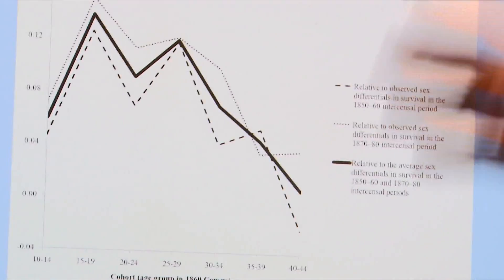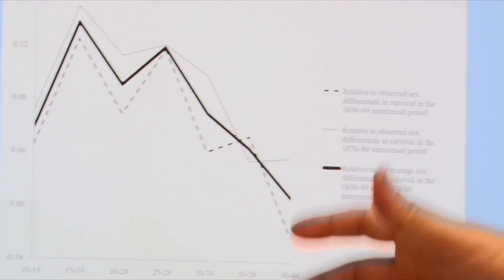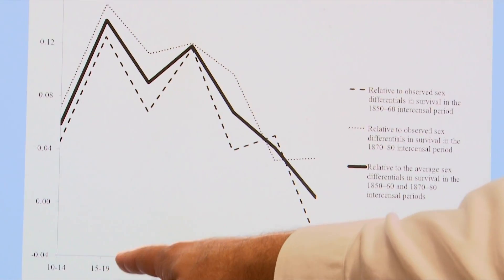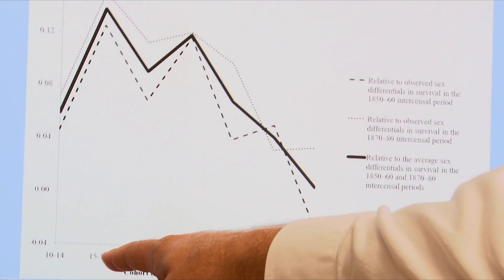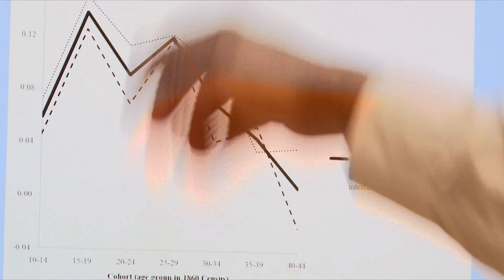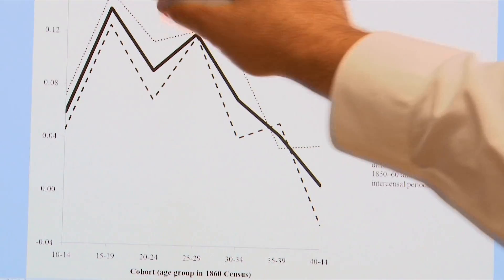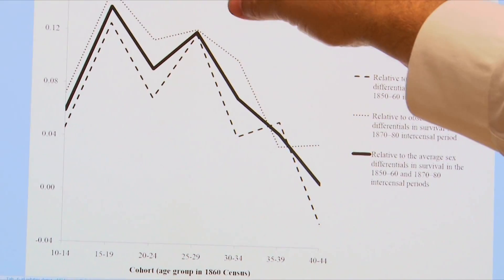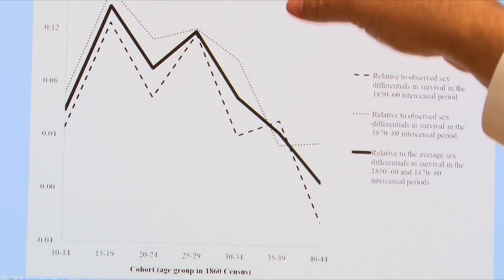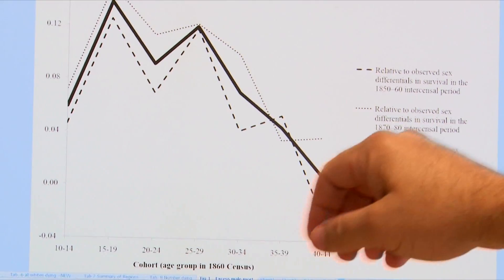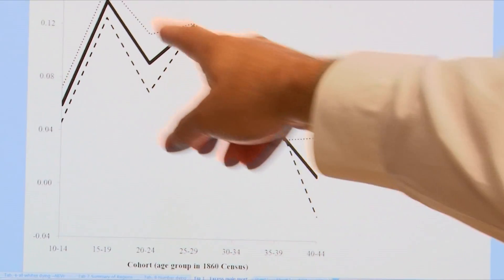This is the excess proportion of men dying in the 1860s. If we look at the age group 15 to 19, about 12 to 14 percent of men in that age group die above what would be expected in the 1860s. And this excess mortality rate falls by age, and that's a result of participation rates in the war itself.